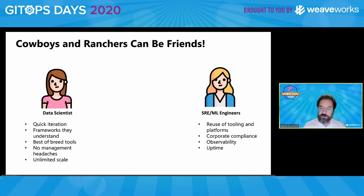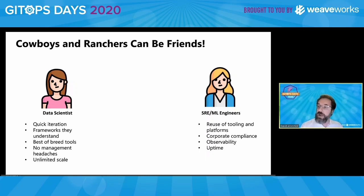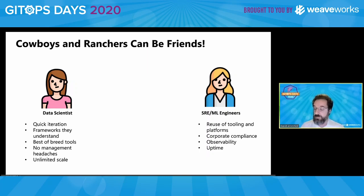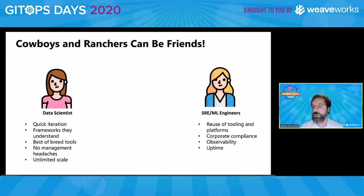Oftentimes you have these two different camps that are very far apart. You have the data scientists who want to move quickly, use the latest tools, do whatever she feels is correct for her particular solution. And then you have the SRE on the other side who's generally much more concerned about stability, enterprise requirements, corporate compliance, observability, and being able to debug in production. These are often very separated, and so our goal here is to bring them together.